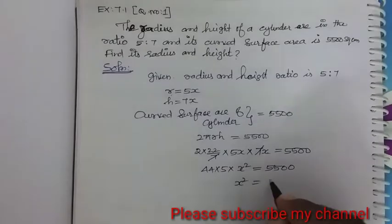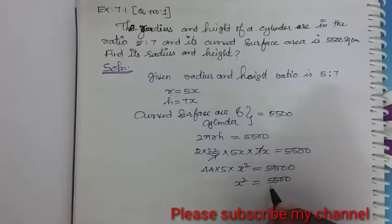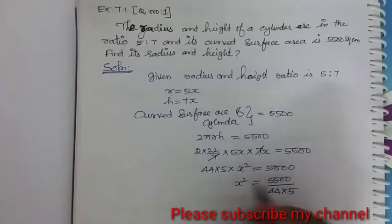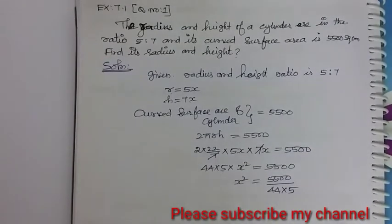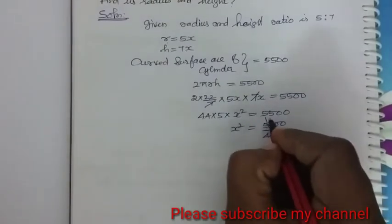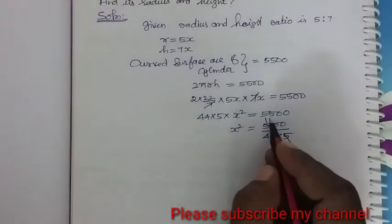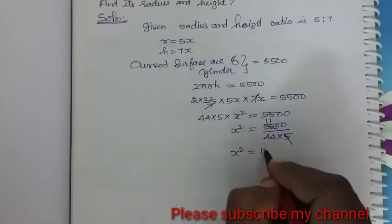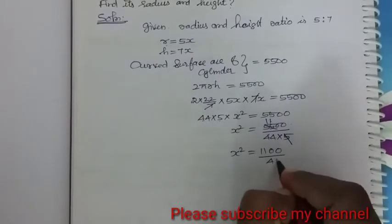Next, x squared is equal to 5,500 divided by 44 into 5. This 44 into 5 will be divided. Next, this 5 here 11 times, 5 times 5 and double 0. So x squared is equal to 1,100 divided by 44.